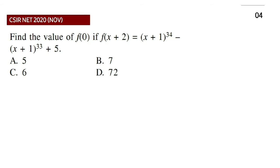Let's start the discussion. First question, as you can see, this is the question from 2020 November paper. Find the value of f(0) if f(x+2) = (x+1)^34 - (x+1)^33 + 5. Obviously where we have to find f(0), you can observe that we have to substitute the value of x as -2, then only we are able to get f(0).